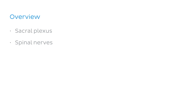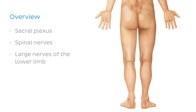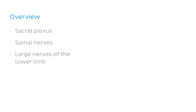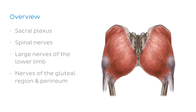Next up will be the main, big nerves that travel into the lower limb. And lastly, we'll finish up with nerves of the gluteal region and the perineum, including any other small branches we may have missed. So, to start, what is the sacral plexus?